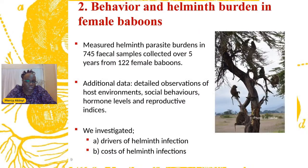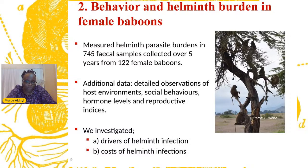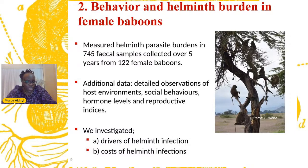The second study looked at behavior and helminth burden in female baboons. We had 745 fecal samples collected over five years from 122 female baboons — emphasizing how amazing longitudinal research is because this is such wonderful data. Demographic data on each individual were available, as well as host environment data such as rainfall and temperature, and behavioral data including agonistic behavior and dyadic interactions. From stool samples we obtained hormone levels and reproductive indices. Using these data, we investigated two main things: the drivers of helminth infection and the costs of helminth infection.